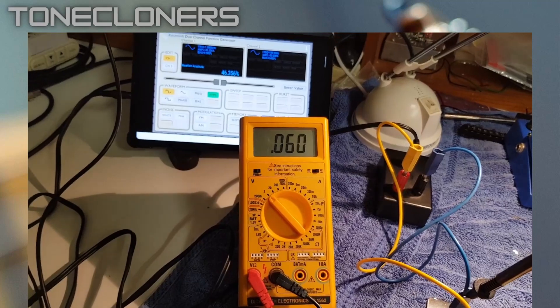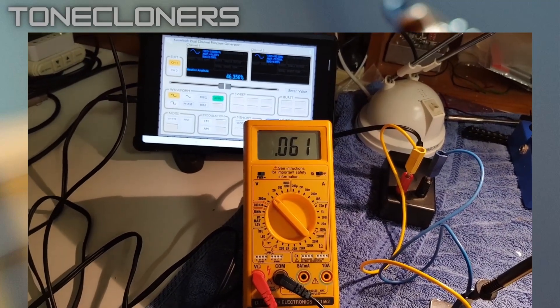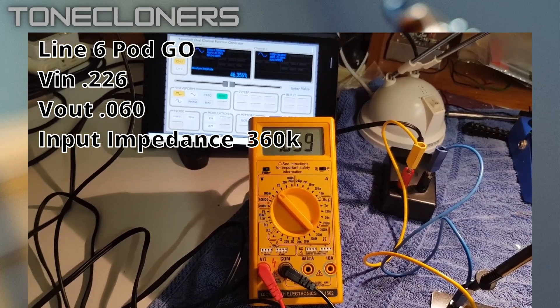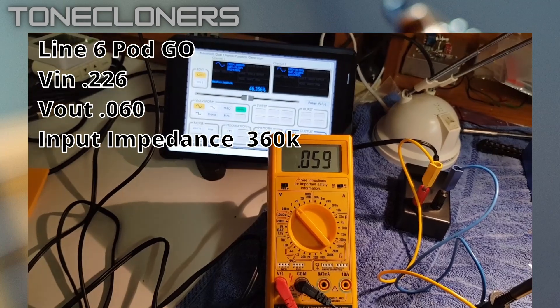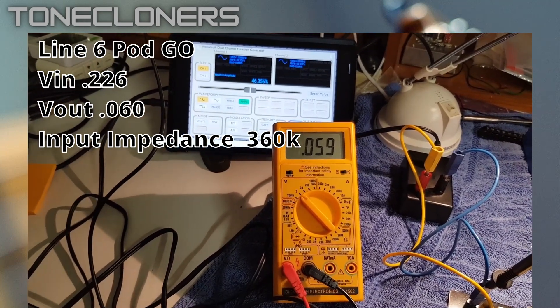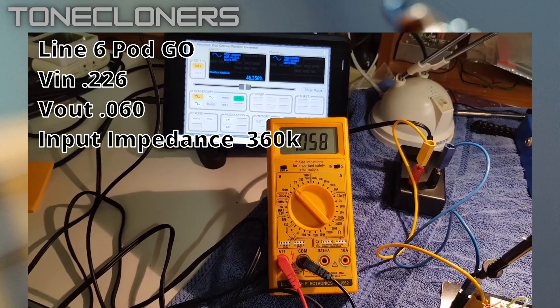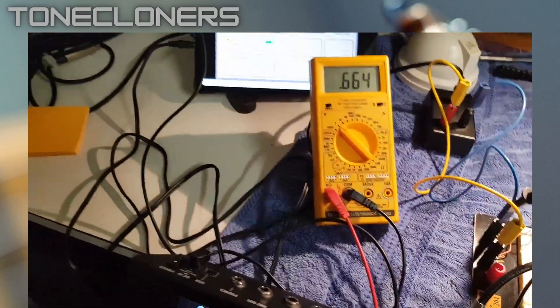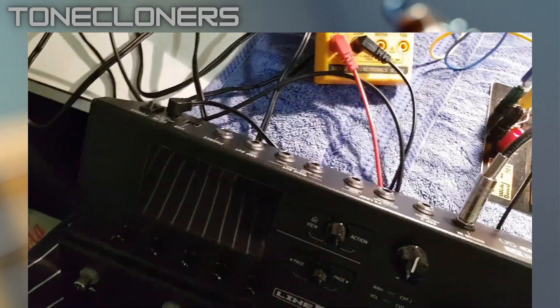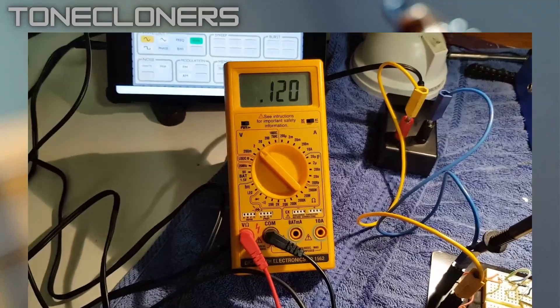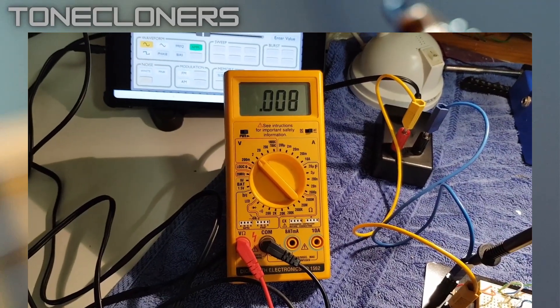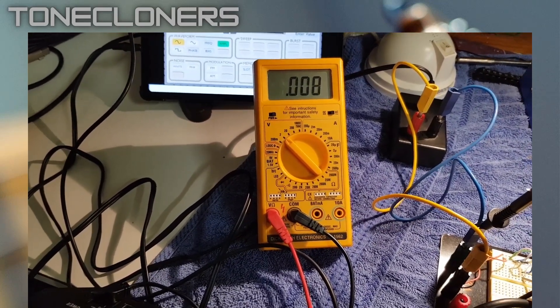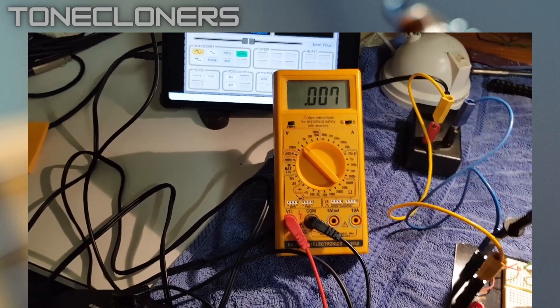So this suggests that the input impedance of the Pod Go is, which would explain the loss of top end that I get plugging into the Pod Go versus plugging directly to an amp or plugging in via a buffer to the Pod Go versus not using a buffer. So I'll show you an interesting thing, though. If you switch that off, the impedance, it's pretty much grounded at this point,